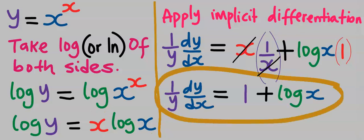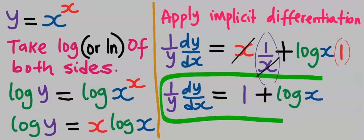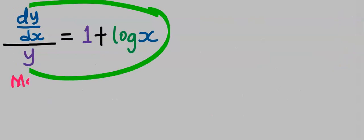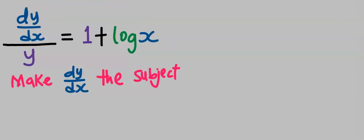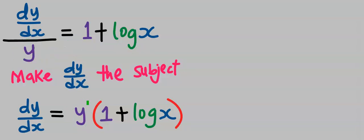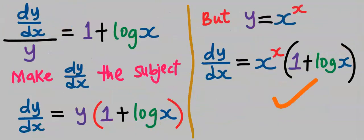The x will cancel with the x, and we are left with this simplified expression. Next, make dy/dx the subject. We can rewrite this function — both forms are the same. Hence, y moves to the other side and multiplies everything. Next, we replace y from the given question: y equals x to the power of x, and this becomes our dy/dx.